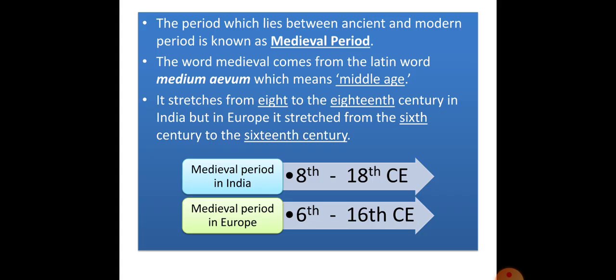The period which lies between ancient and modern period is known as medieval period. The word medieval comes from the Latin word 'medium evum', which means middle age. So in class 7, we are going to study about the medieval period, as in class 6 you must have studied about the ancient period. We will focus on medieval period in class 7.